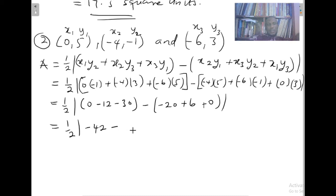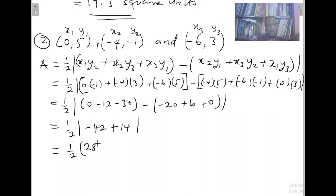Negative 42 minus negative 14 gives us negative 42 plus 14 equals negative 28. Don't forget we are using absolute value, so the answer is supposed to be negative 28, but because we are writing the absolute value we ignore the negative sign. So we have 28, and one half times 28 gives us 14 square units.